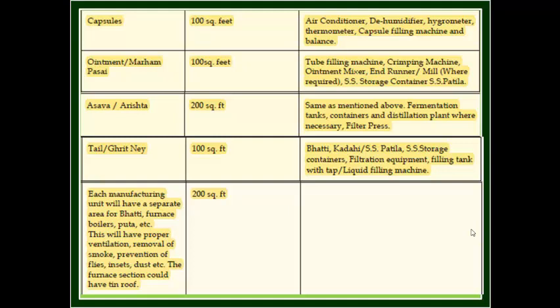Six: Tail (oil). Space required: 100 square meters. Recommended equipment: bhatti, kadai, stainless steel storage containers, filtration equipment, filling tanks, liquid filling machines, etc.